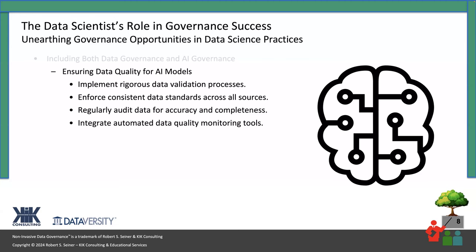These things are not going to happen on their own. When we talk about enforcing consistent data standards, that means that we as data governance practitioners need to be focused on making certain those standards exist and that we have processes in place for auditing accuracy and completeness. What we're trying to do is figure out how we can leverage the things data scientists do already to help them recognize that what they're truly doing is helping to govern, and how they can do that better to provide a better governed data and AI environment for the organization.